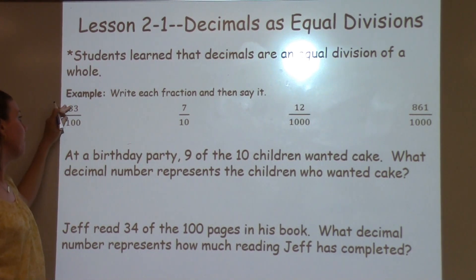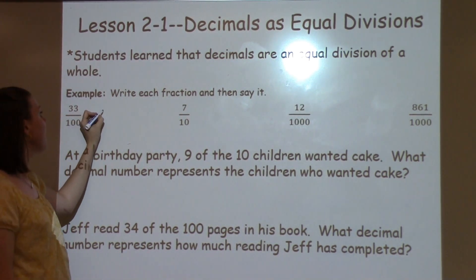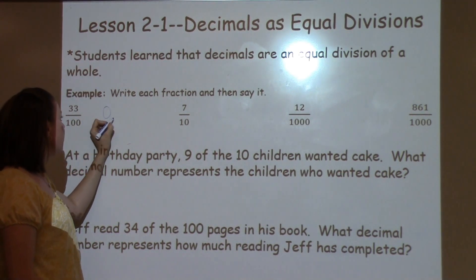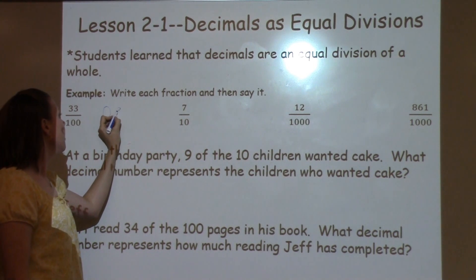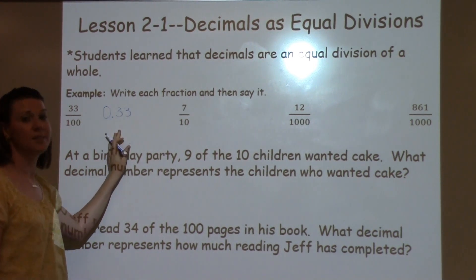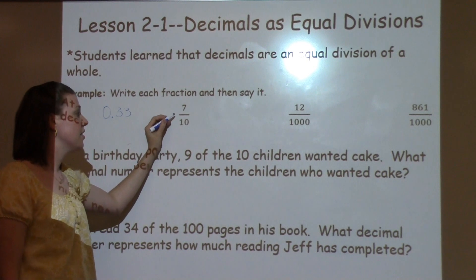So when I say that, I have 33 out of 100. Writing it as a decimal, I would write 0 and my decimal and 33 hundredths. My next one I have is 7 tenths.